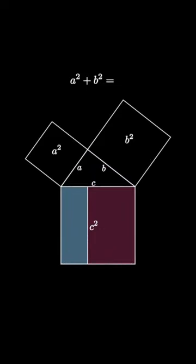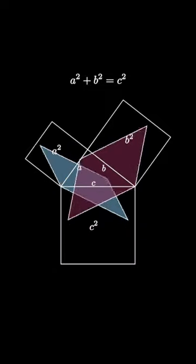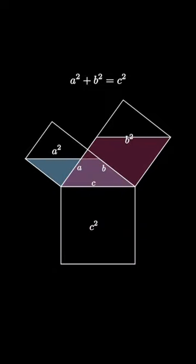Since shearing and rotating doesn't affect the area, we see that a squared plus b squared must equal c squared. So here we have a visual proof of the Pythagorean theorem, which says that the sum of the squares of the legs of a right triangle must equal the square of the hypotenuse.